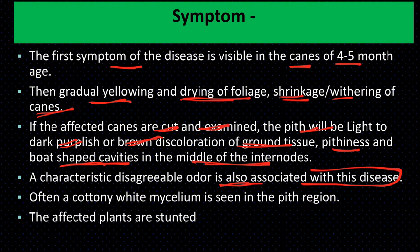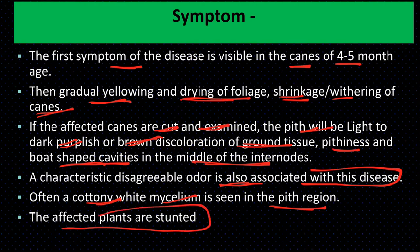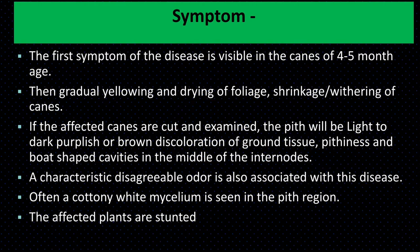Cottony white or grey mycelium can be seen in the pith region, and finally the affected plants are stunted. These are the symptoms observed in 3 to 5 month old plants — this is sugarcane wilt.